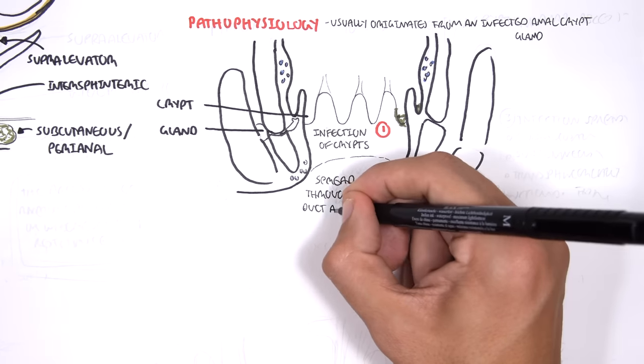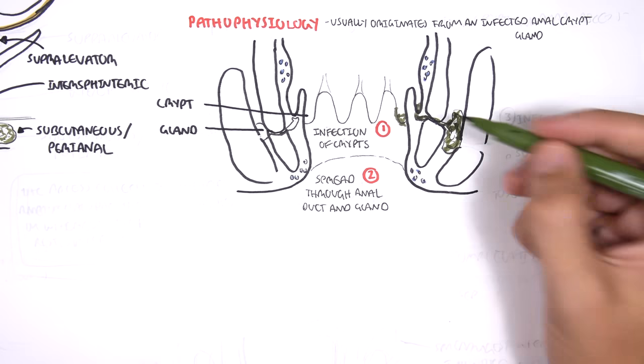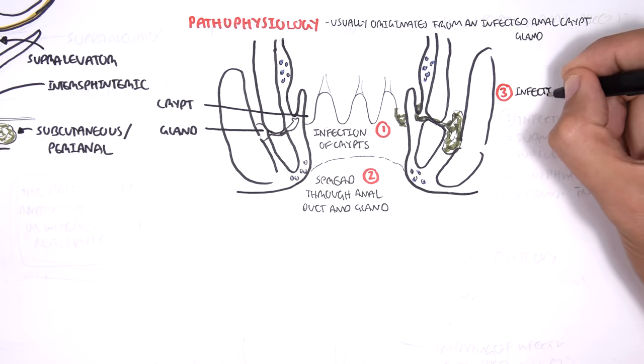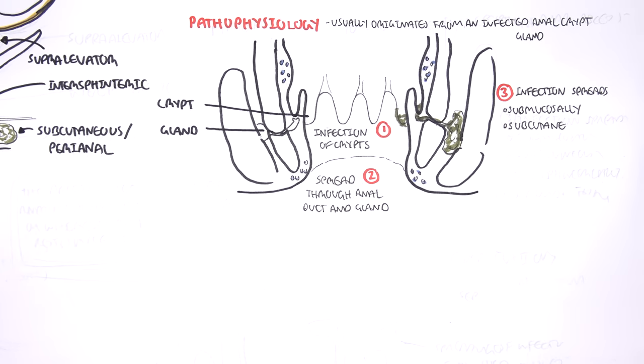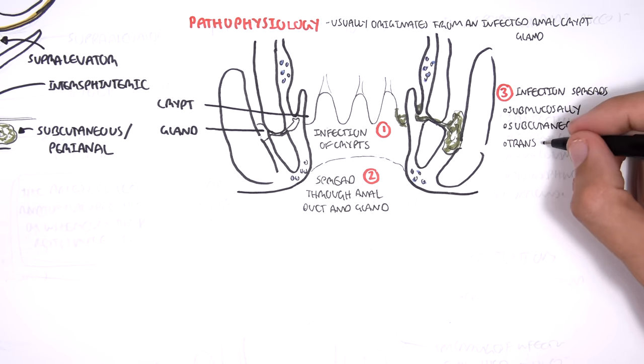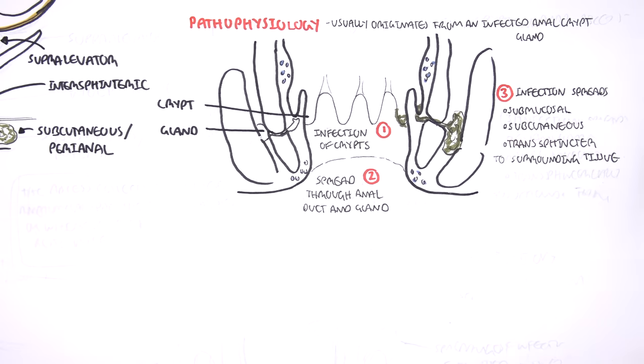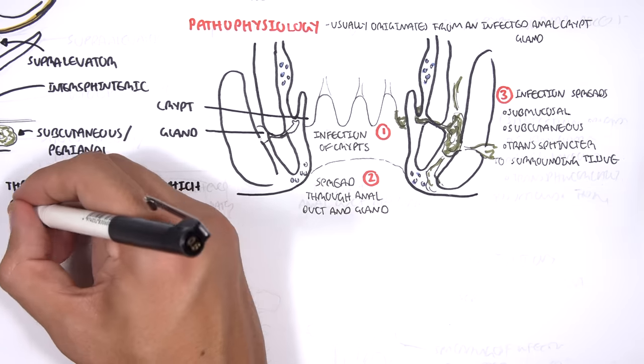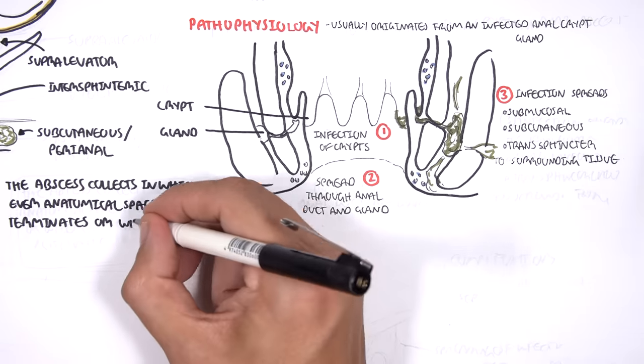And from these crypts, the bacteria can spread through the anal duct and then infect the glands. From here, the infection can spread really anywhere where there is least resistance. It can spread submucosally, subcutaneously, and transsphinctericly, or other areas around the tissue. The general rule is that the abscess will collect in whichever anatomical site the glands terminate, or whichever path of least resistance is.